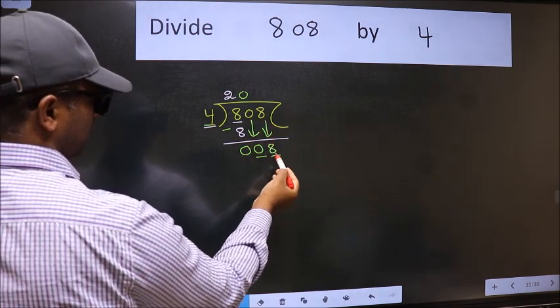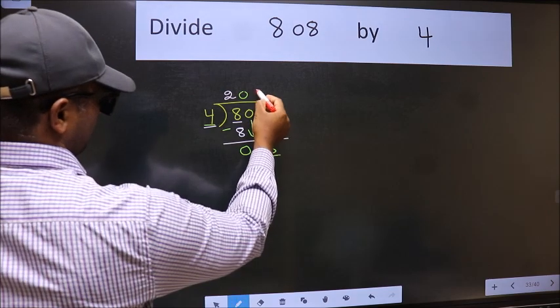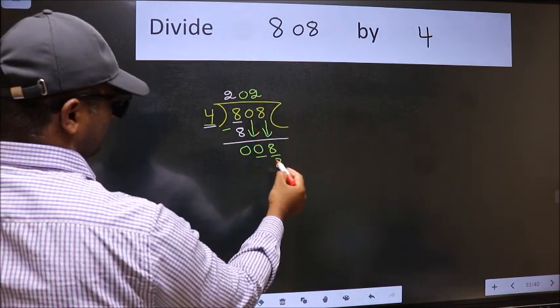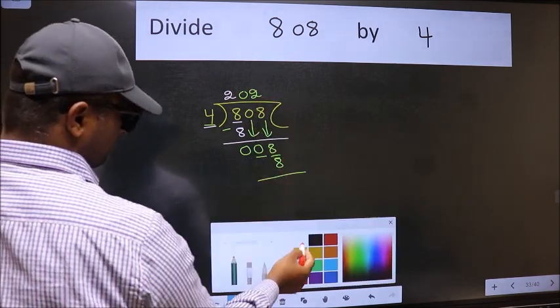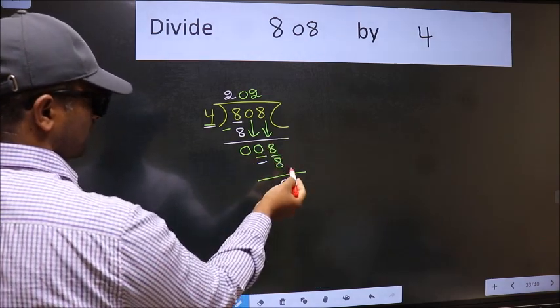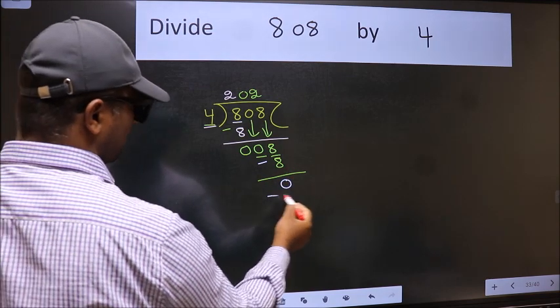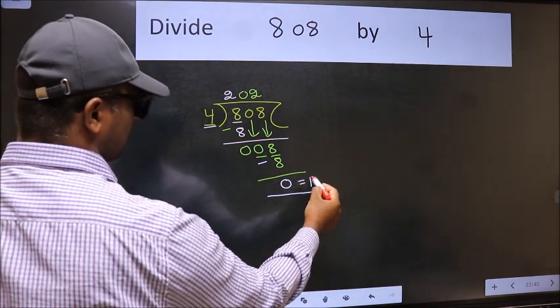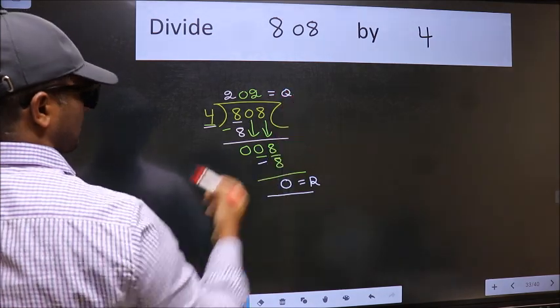Now 8. When do we get 8 in the 4 table? 4 twos, 8. Now we should subtract. We get 0. No more numbers to bring down. So we stop here. This is our remainder and this is our quotient.